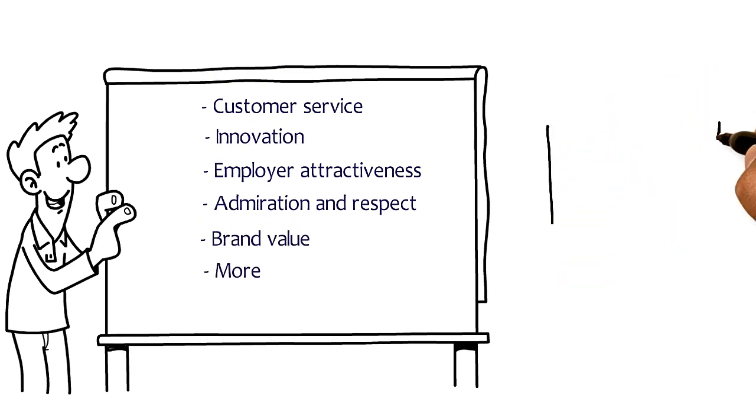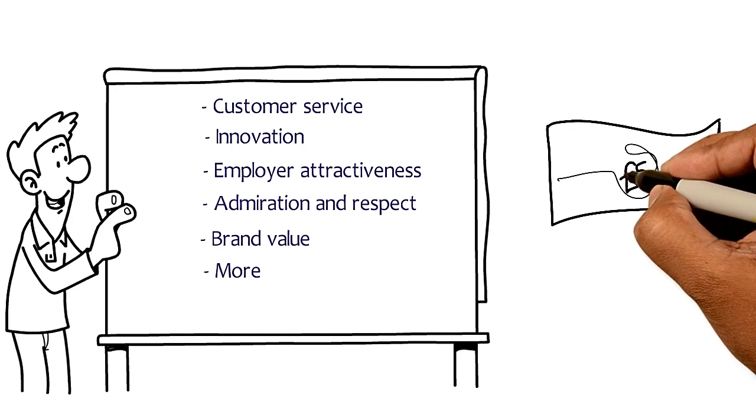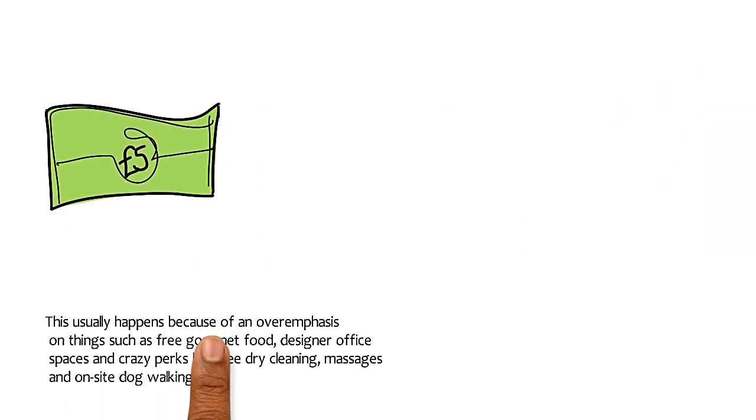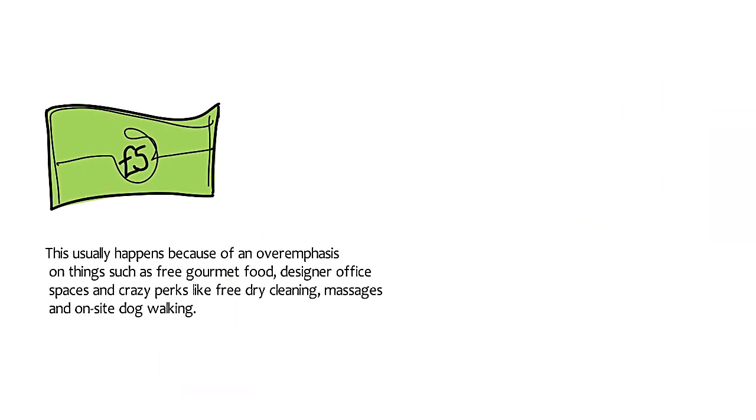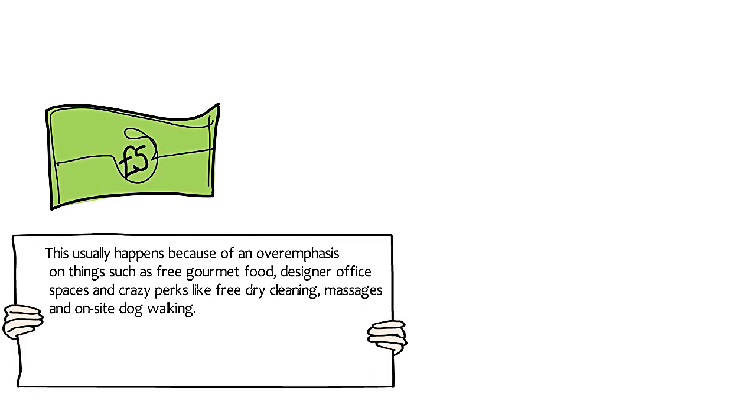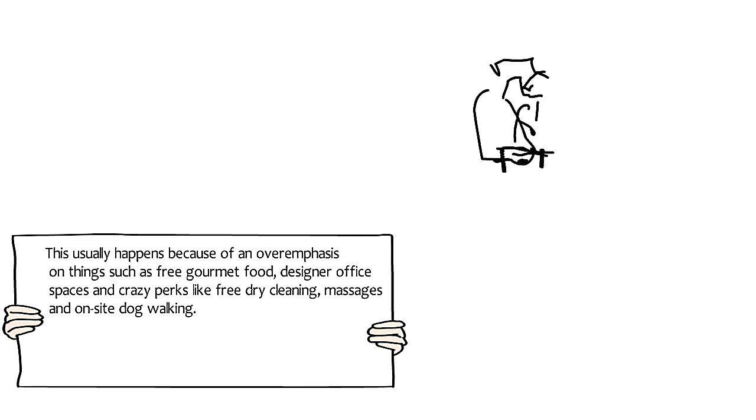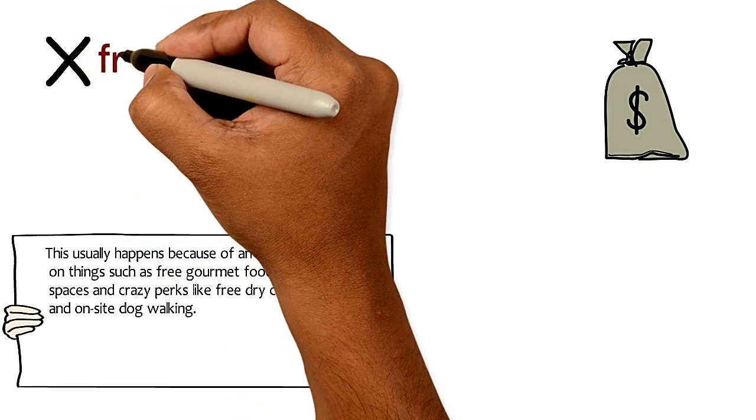One of the things that organizations always get concerned about is cost, Morgan explains. This usually happens because of an overemphasis on things such as free gourmet food, designer office spaces, and crazy perks like free dry cleaning, massages, and on-site dog walking. It's true, these things do cost money, but the majority of things that shape the employee experience are actually free.